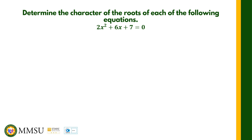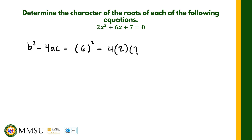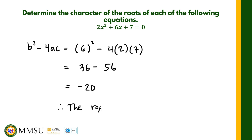Finally, determine the character of the roots of 2x squared plus 6x plus 7. The discriminant b squared minus 4ac equals 6 squared minus 4 times 2 times 7, which is 36 minus 56. Therefore we have a negative value of the discriminant. When the discriminant is negative, the roots are imaginary.